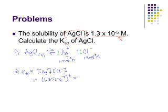So let me get out my calculator here. 1.35 times 10 to the minus fifth. We'll square that. And I get an answer of 1.82 times 10 to the minus 10.